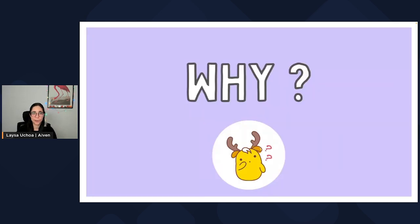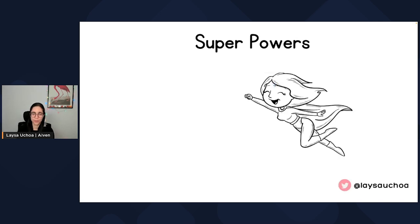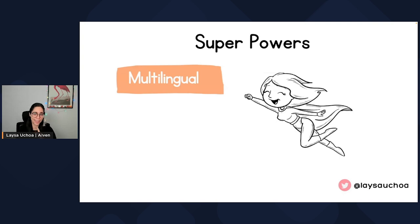Now I will dive into why you should consider using OpenSearch in your projects. When I think about OpenSearch, I think about the superpowers that it has. If OpenSearch would be a hero, I would say it would be able to speak many languages. OpenSearch has support for more than 30 languages. So if you are sending your data to OpenSearch, you can actually specify which language that is, and it will optimize for searching.